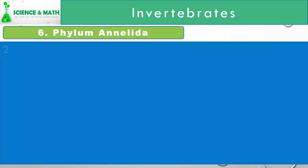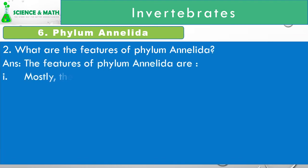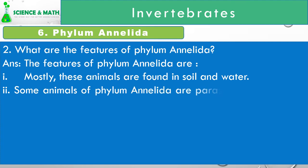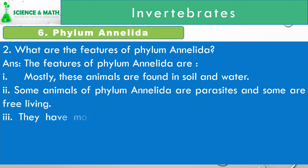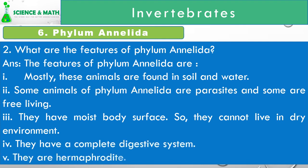Features of Phylum Annelida: 1. Mostly these animals are found in soil and water. 2. Some animals of Phylum Annelida are parasites and some are free-living. 3. They have a moist body surface, so they cannot live in a dry environment. 4. They have a complete digestive system. 5. They are hermaphrodite. Hermaphrodite means those animals in which male and female sex organs are present in the same body. These are some of the important features of Phylum Annelida, and many other features can also be observed.